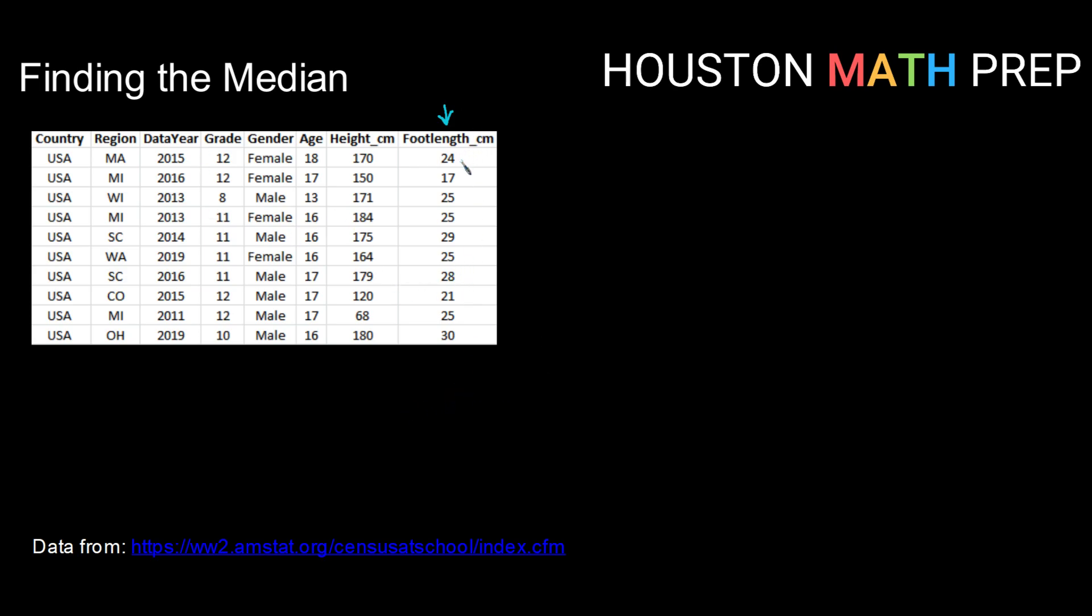So I'm going to scan through and find my smallest value, which is 17, and I'm going to write that one down first. I'm then going to continue until I have all my data in order.